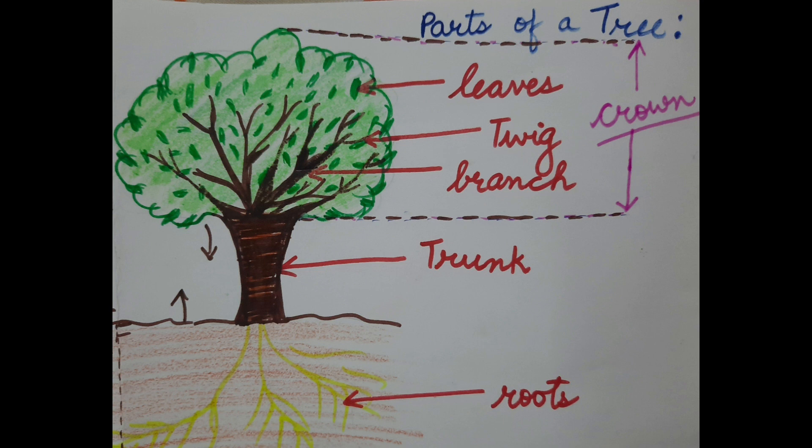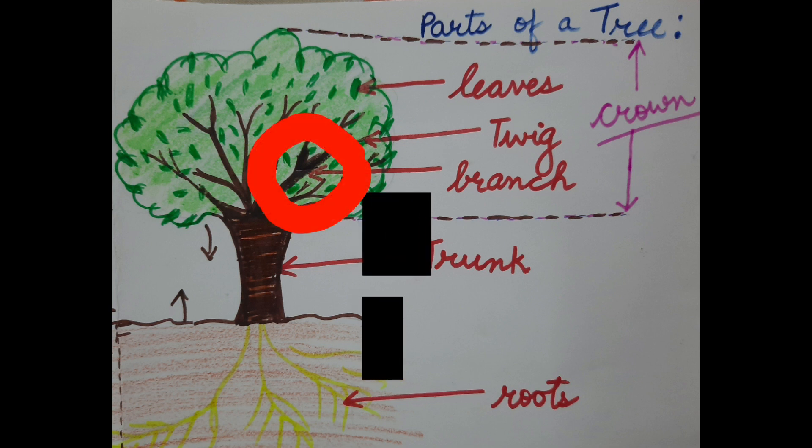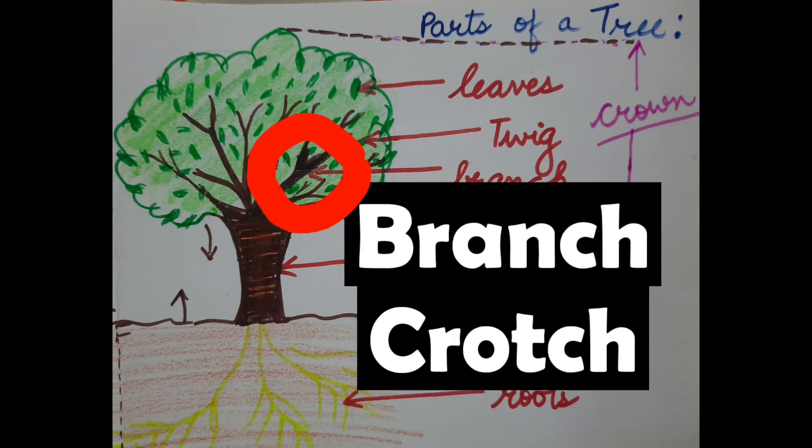The point where two branches come together is called branch crotch. Now, this is the branch crotch.